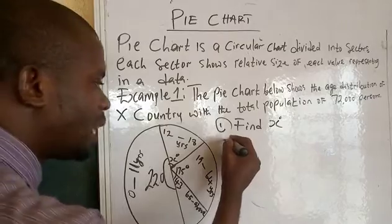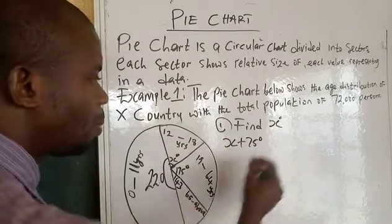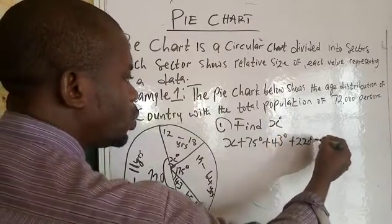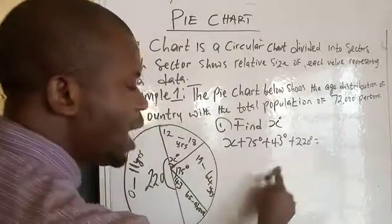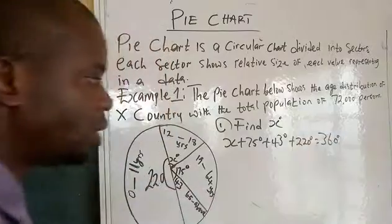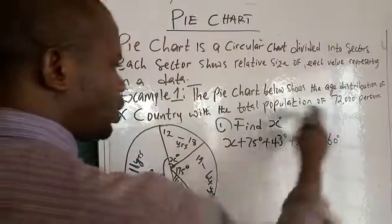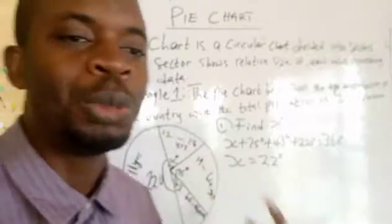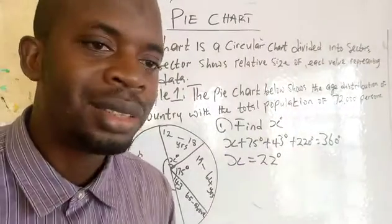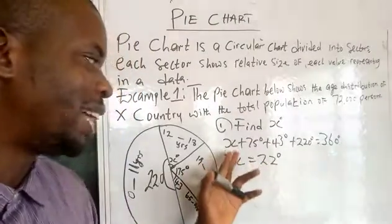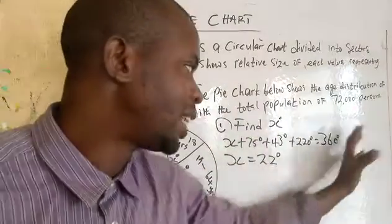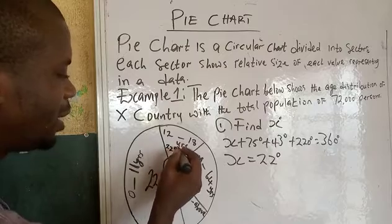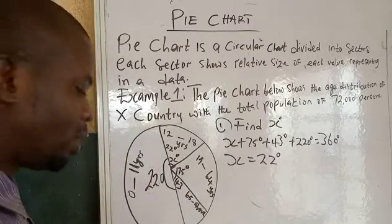What you have to do is add everything together: x + 75° + 43° + 220°. When you add everything together in this circle it gives you 360°. So you take all the known values to the other side: 360 minus all those values gives you x = 22 degrees. Our x here is 22 degrees.